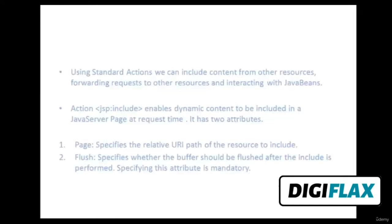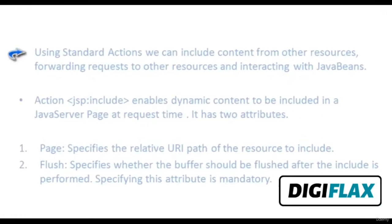In this video tutorial, we are going to learn standard actions. Using standard actions, we can include content from other resources, forward requests to other resources, and interact with Java Beans. The jsp:include action enables dynamic content to be included in a Java Server Page at request time. It has two attributes: the page attribute, which specifies the URL path of the resource to be included, and the flush attribute, which specifies whether the buffer should be flushed after the include is performed. Specifying the flush attribute is mandatory and it currently supports only the true value.